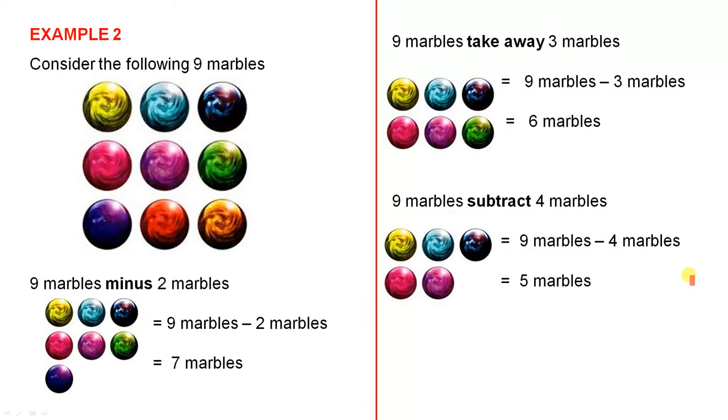Example two. Consider the following nine marbles. That's three, six, nine. There are definitely nine of them there. Nine marbles minus two marbles. So pretend we take these two away here. Look at this diagram. They're gone. They no longer exist. Nine marbles take away two marbles or nine marbles minus two marbles leaves us with seven marbles. And here they are. I just count them and you have seven.